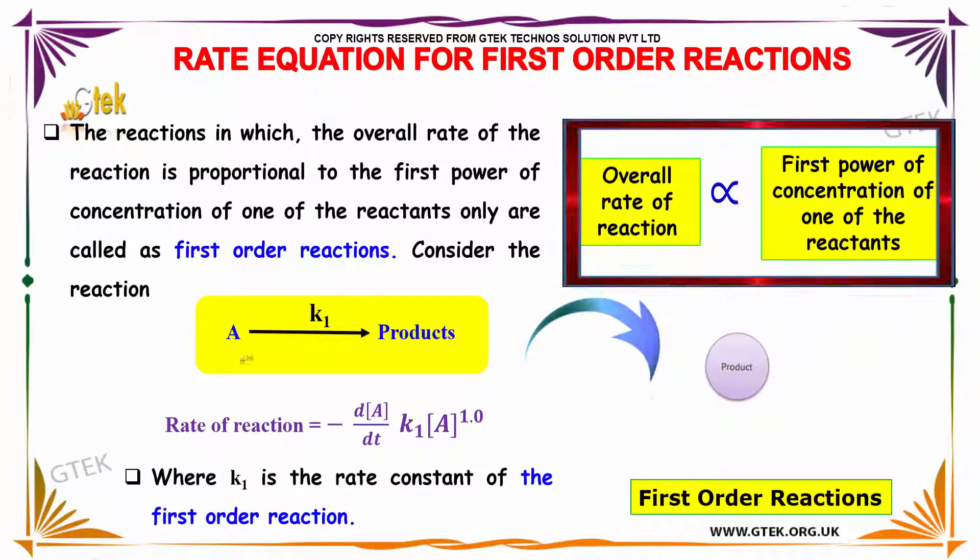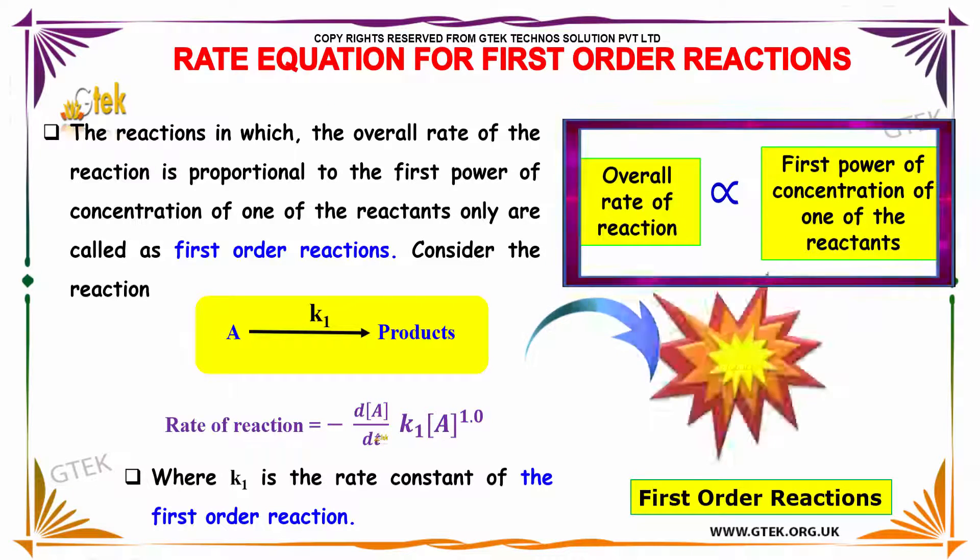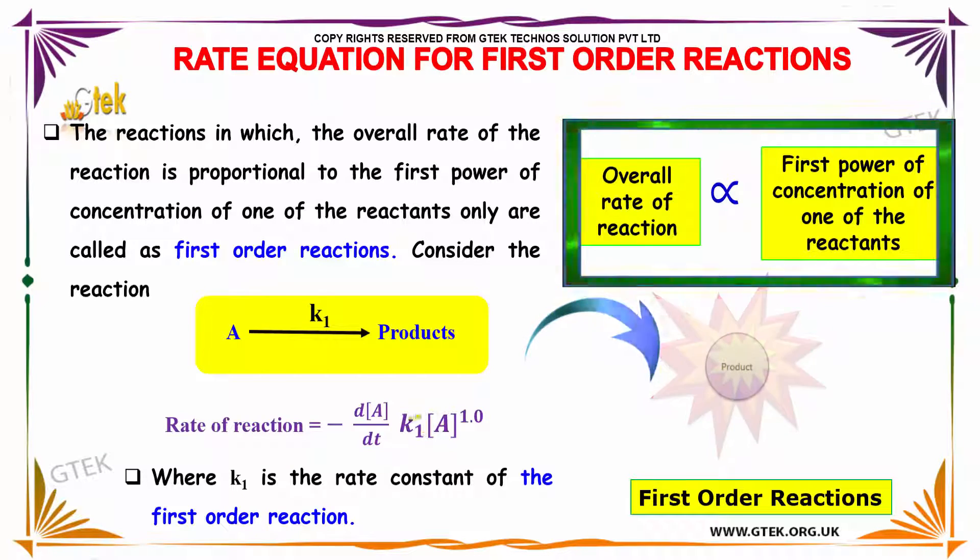Consider the reaction A which gives the product with the constant K1. The rate of the reaction is equal to minus dA/dt = K1[A]^1.0, where K1 is the rate constant of the first-order reaction.